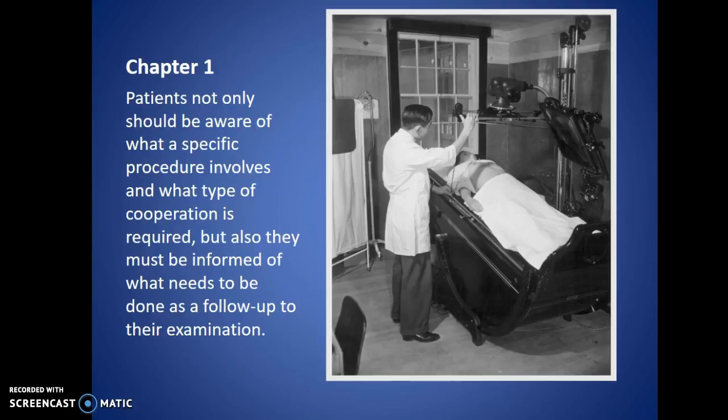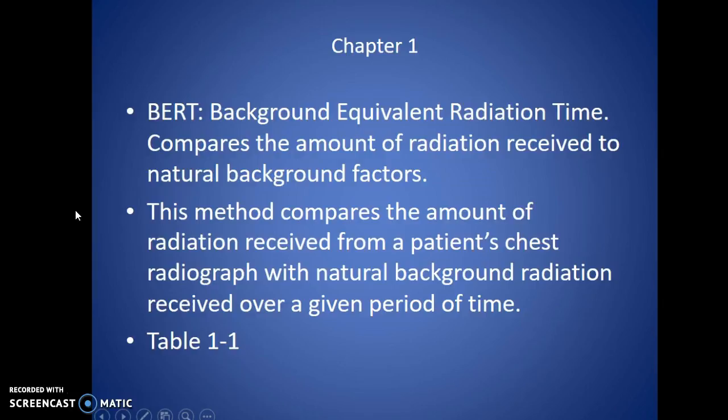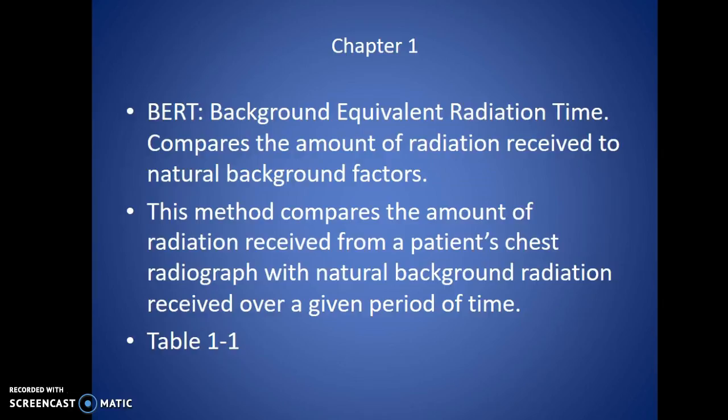Background equivalent radiation time compares the radiation a patient receives at their exam to natural background factors — what they would normally get just living and walking around. For example, a chest x-ray can be compared to natural background radiation — you can say it's about the same amount you'd get in 10 days of just walking around this planet. Depending on where you live, some places have higher radiation doses because of altitude.